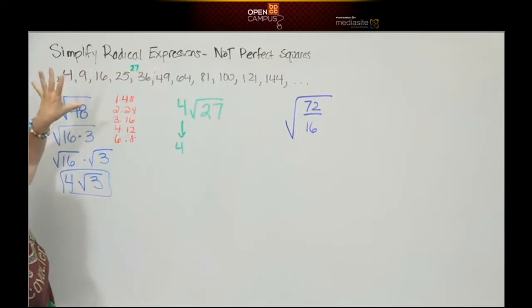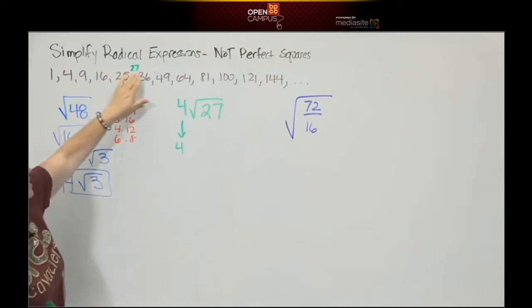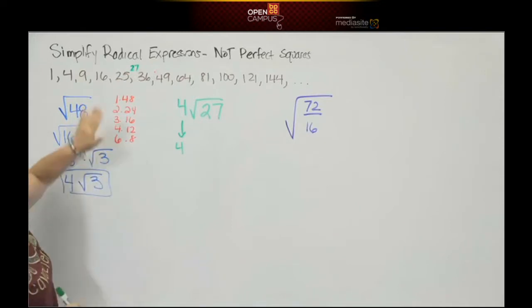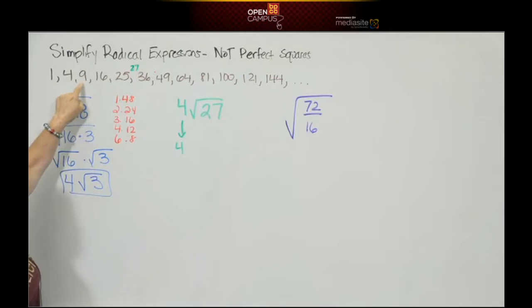We're trying to find a number that divides into 27. Will 25 divide into 27 evenly? No. Will 16 divide into 27 evenly? No. Will 9 divide into 27? Yes. That's your perfect square.